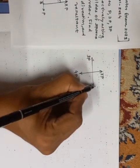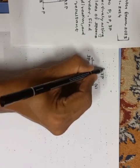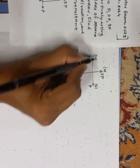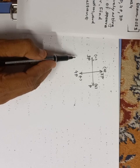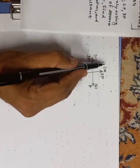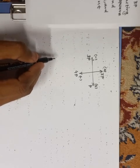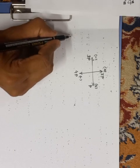And we know the sign convention, this is plus, this is plus, this is minus and this is minus. So to avoid confusion. Now, we can find the resultant of forces.